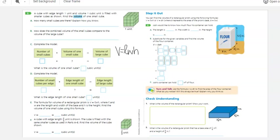A cube with edge length of 1 unit and volume 1 cubic unit is filled with smaller cubes as shown. Find the volume. How many cubes are there?